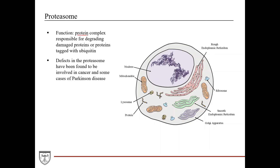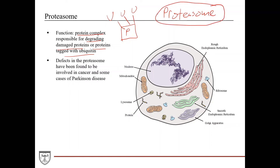The proteasome is a protein complex responsible for degrading damaged proteins or proteins tagged with ubiquitin. If a protein gets ubiquitinated — has ubiquitin added to it — that acts as a tag or signal to the proteasome to come and degrade it. So if you have either a damaged protein or a protein that's been around too long, it gets ubiquitinated and tagged for proteasomal degradation. Proteins are cyclical and have a lifespan — like a car eventually needing new tires or engine parts, cells need to renew proteins, and that's part of the cyclical process.